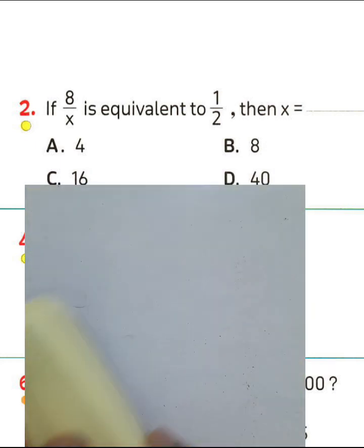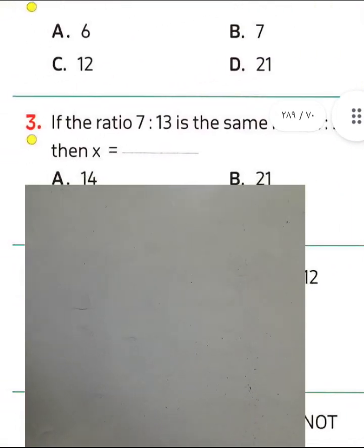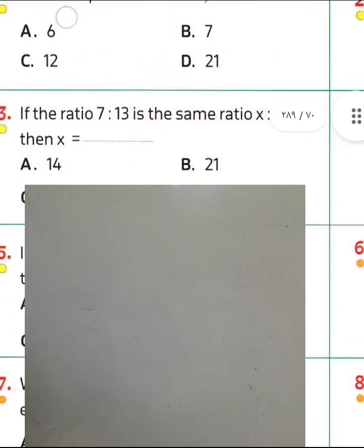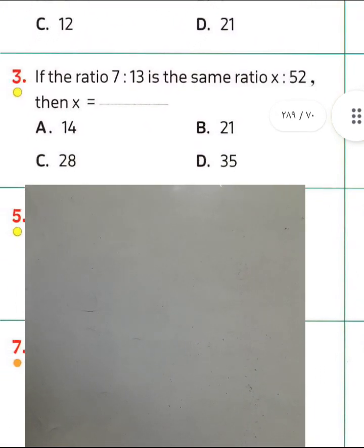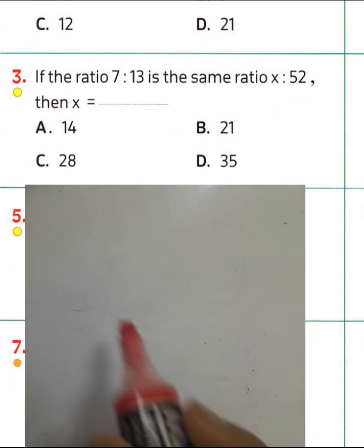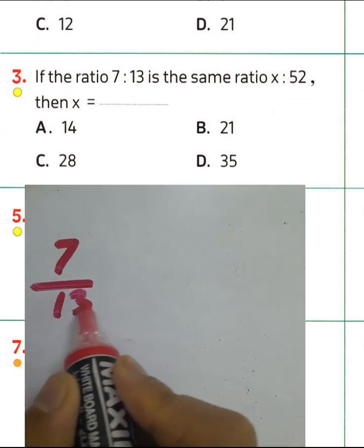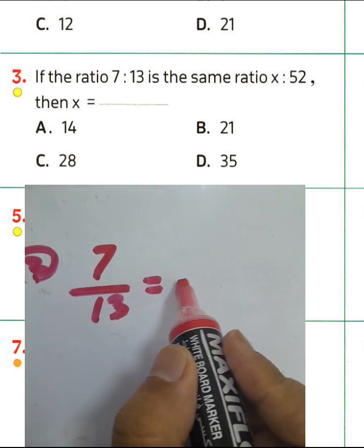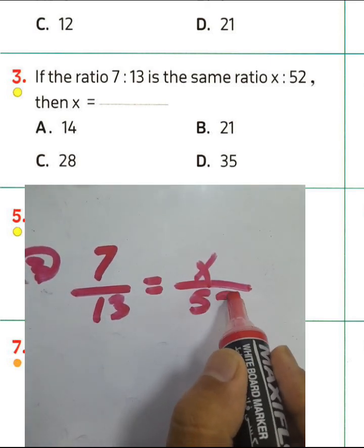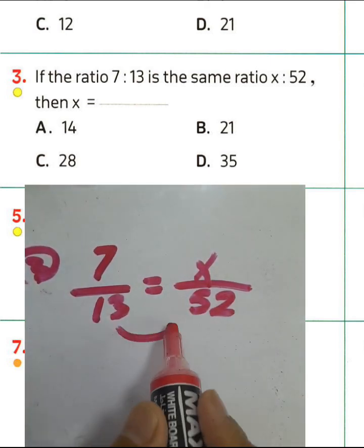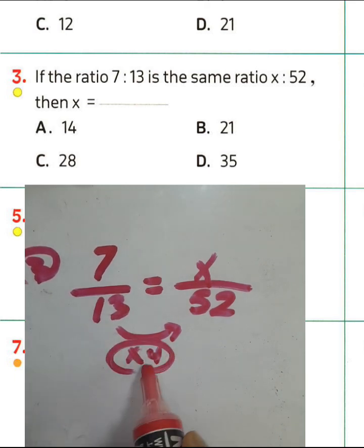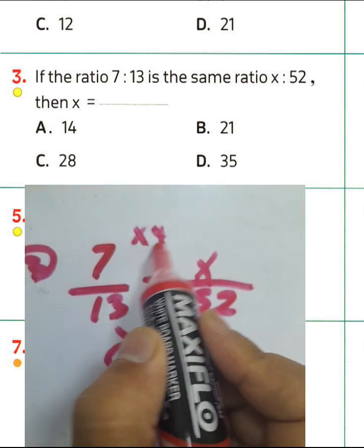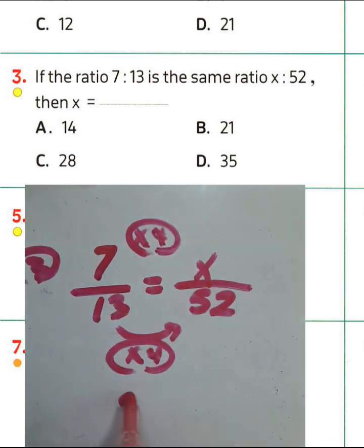Question number 3: is the ratio 7 to 13 the same as x to 52? We know 13 times 4 equals 52, then 7 times 4 equals 28, so the value of x equals 28.